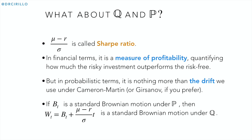What we find is that probability P can be obtained as a Wang transformation of probability Q, but now the C term is no longer sigma times sqrt(T − t); it is (mu − r)/sigma times sqrt(T − t). In the quantity (mu − r)/sigma, you will recognize the drift used in the Cameron-Martin theorem to move from P to Q. This quantity also has a name in finance: the Sharpe ratio. It is a measure of profitability quantifying how much the risky investment outperforms the risk-free rate relative to its volatility sigma — perceived in the Markowitz universe as a measure of risk.